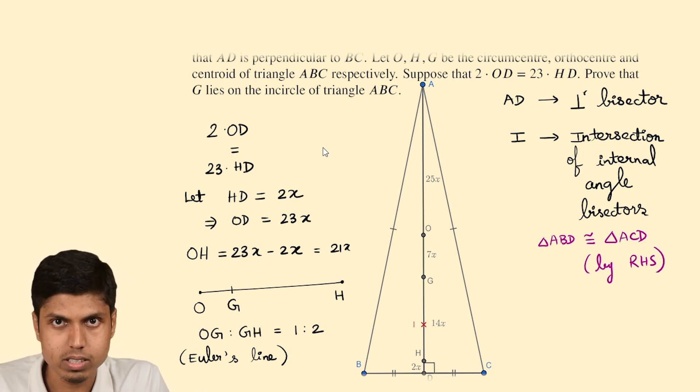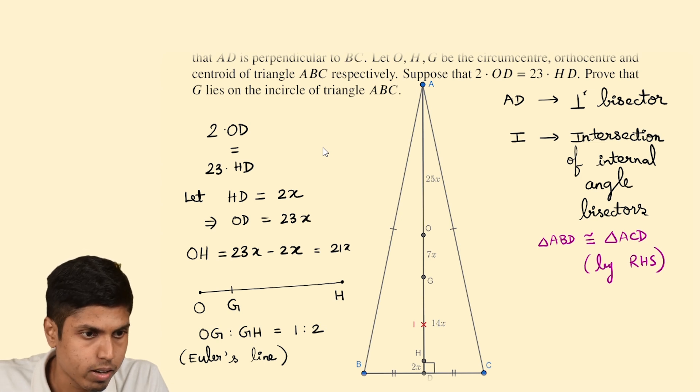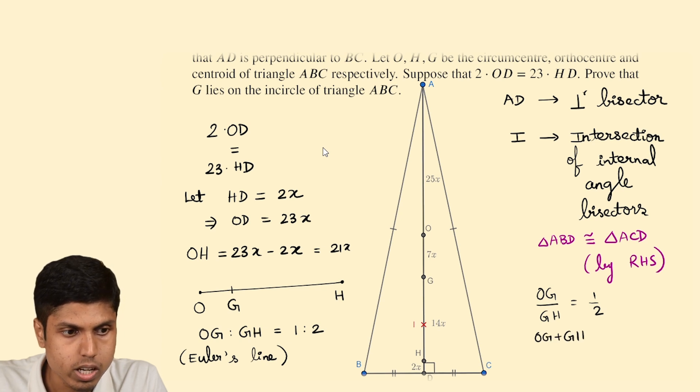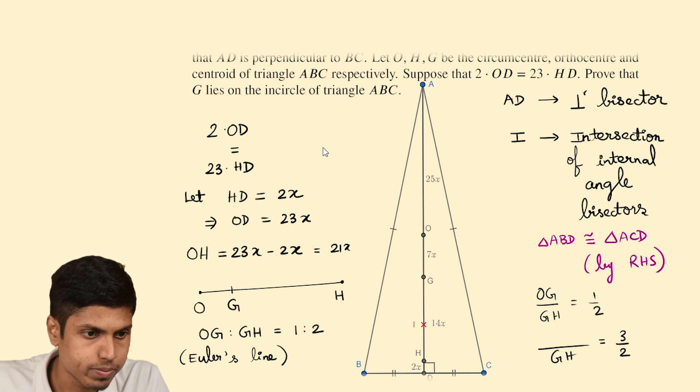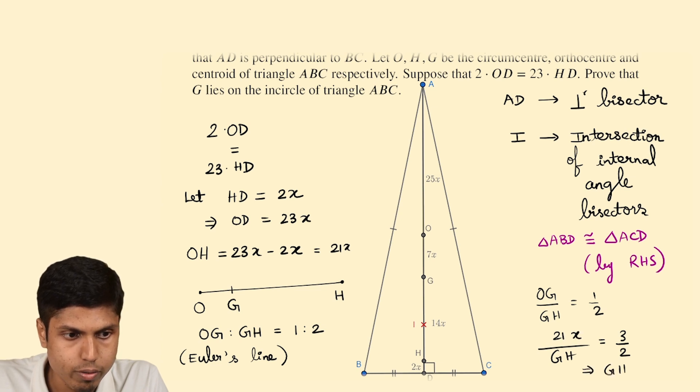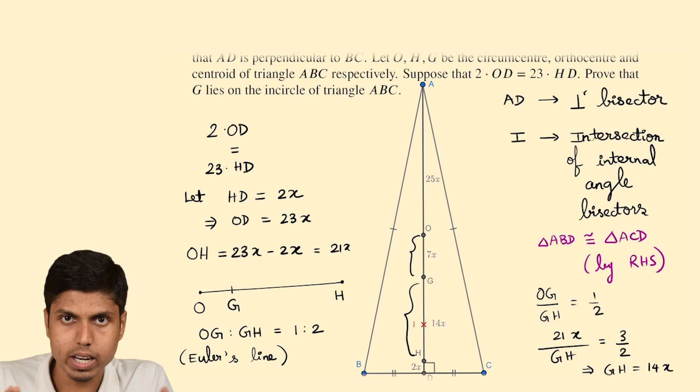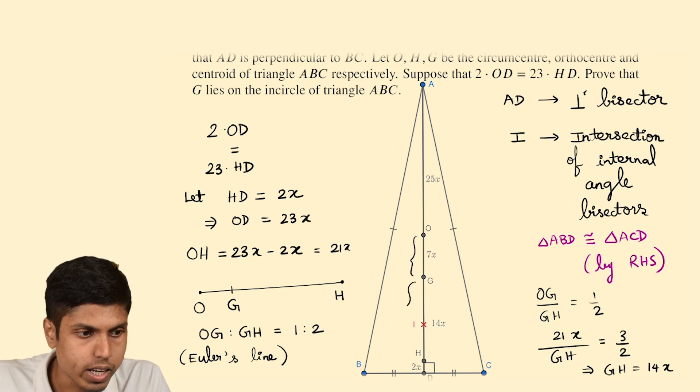So by using this result we will get OG by GH as 1 by 2 and when you add 1 both sides you get OG plus GH upon GH equals 3 by 2. Now OG plus GH is nothing but OH so let's replace and OH is 21X as shown here OH is 21X. Let's replace that as well. So we would get GH to be 14X. So GH is 14X and consequently OG will be 7X. The remaining 21 minus 14 will be 7X. So we found OG, GH, HD.